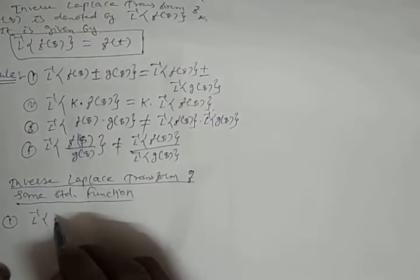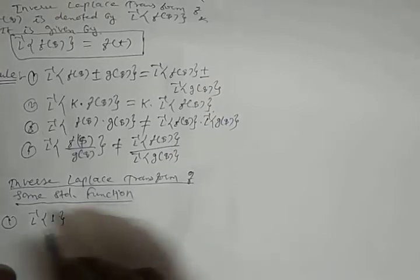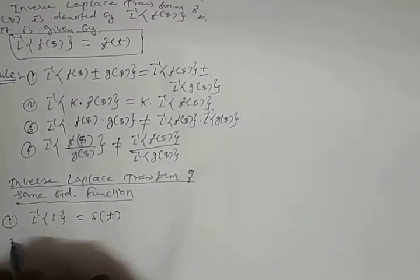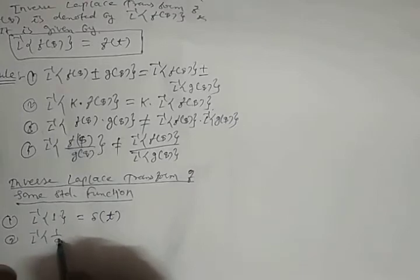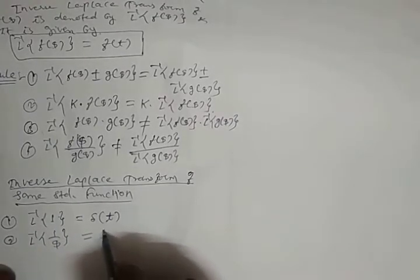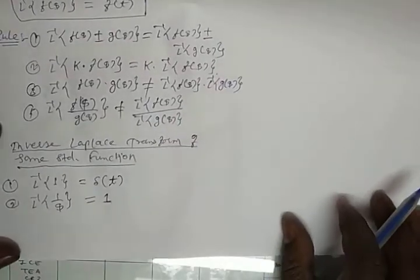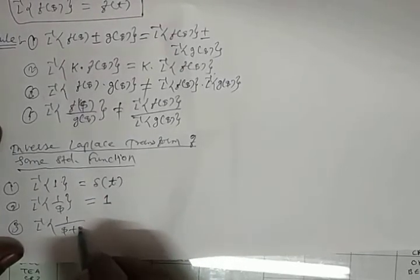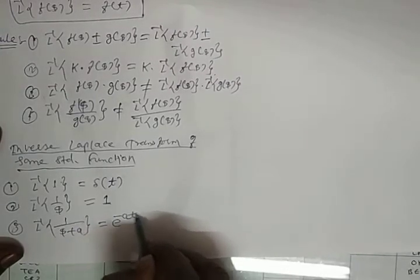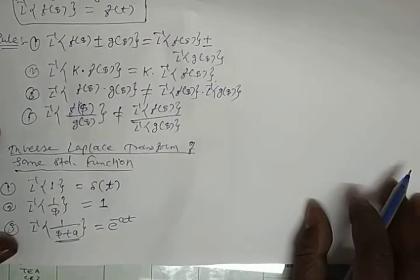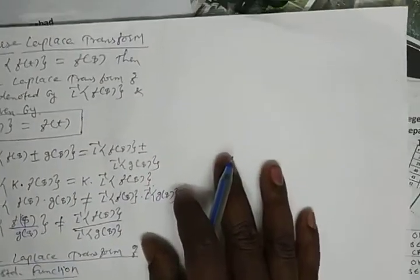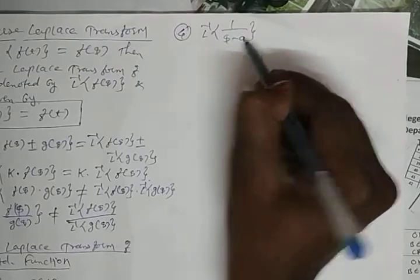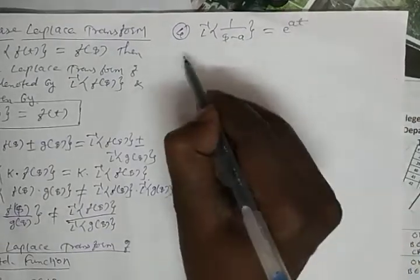L⁻¹{1} = δ(t), the delta function. L⁻¹{1/s} = 1. L⁻¹{1/(s+a)} = e^(−at). L⁻¹{1/(s−a)} = e^(at). L⁻¹{a/(s²+a²)} = sin(at), and L⁻¹{s/(s²+a²)} = cos(at).